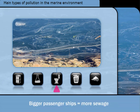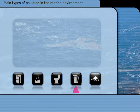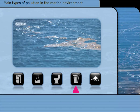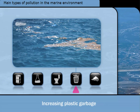Passenger ships grew in size and produced larger, more noticeable volumes of sewage, especially when moored or anchored. Garbage in the sea became a real problem, due to the combined effects of increasing volumes from land and ship sources, and an increasing proportion of plastic, which takes much longer to break down in the environment.